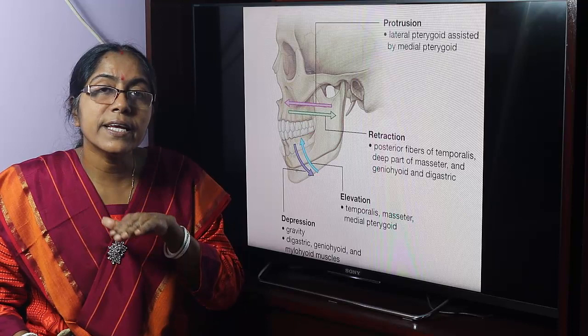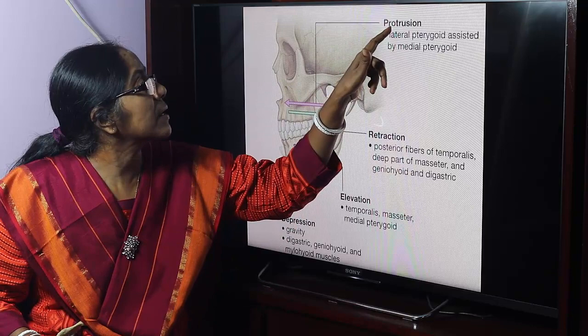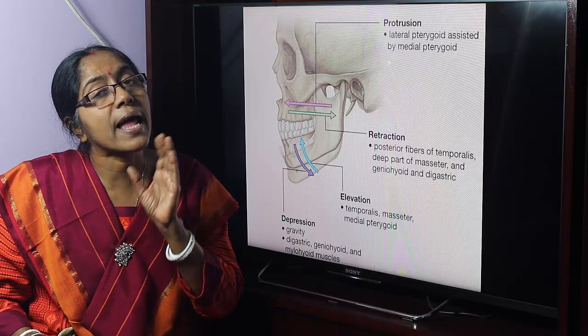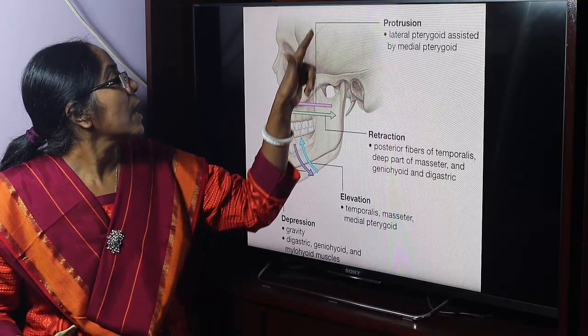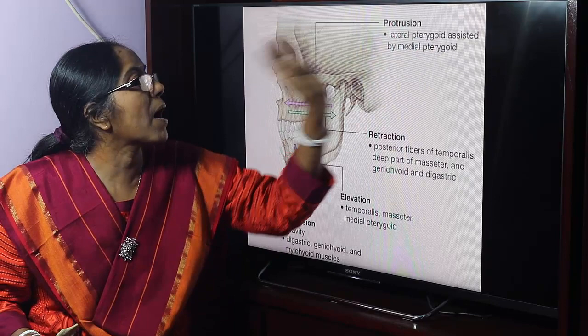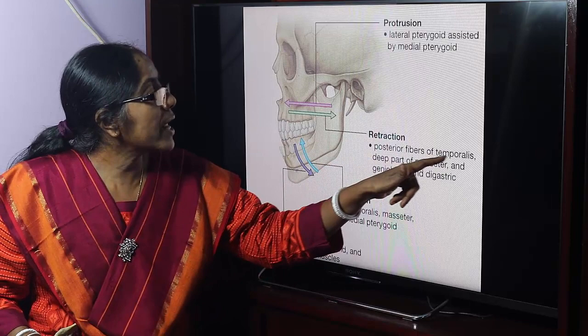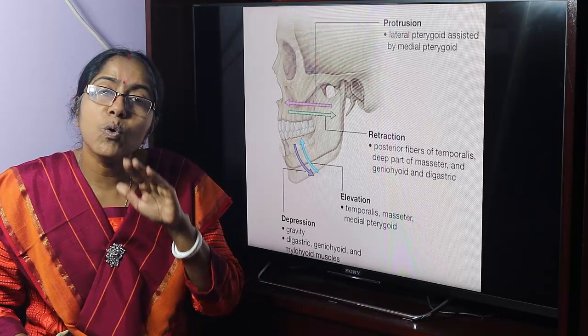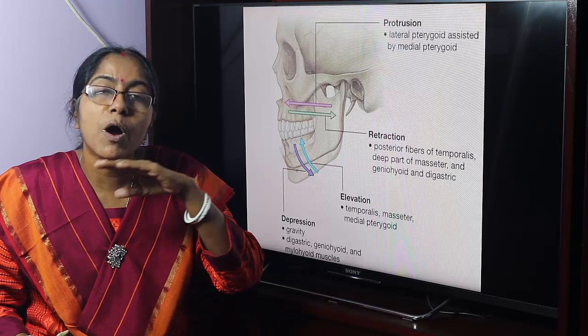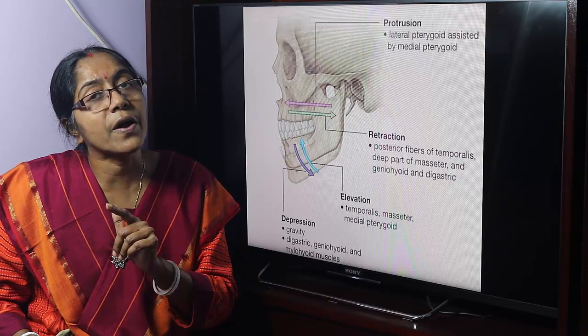Movements in the menisco-temporal compartment include protraction and retraction, which involve forward and backward movement of the mandible. The menisco-mandibular compartment allows elevation and depression, which occur around a transverse axis. Protraction — the forward movement of the mandible — is produced mainly by the lateral pterygoid, assisted by the medial pterygoid muscle.